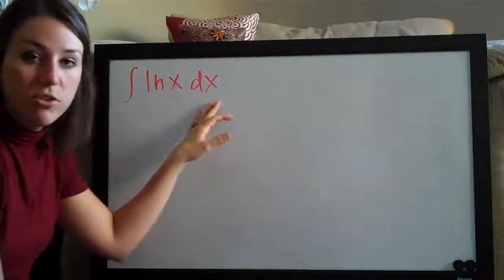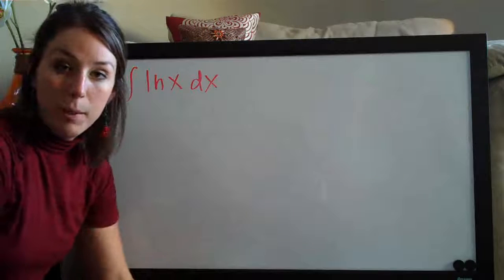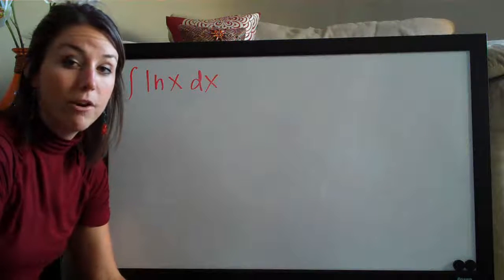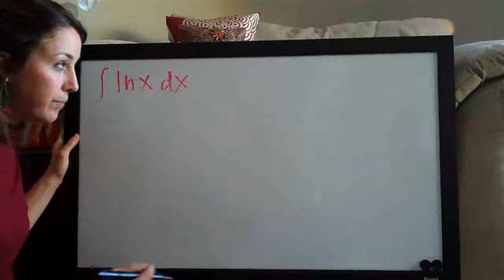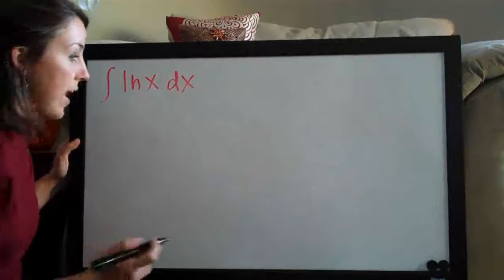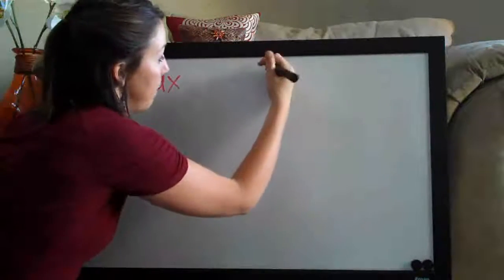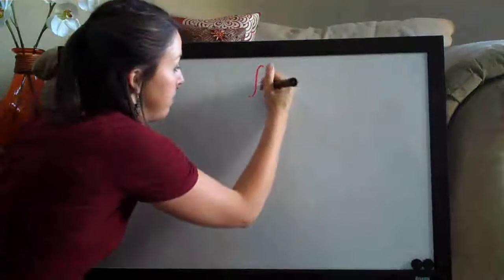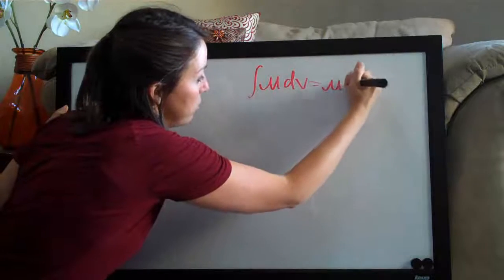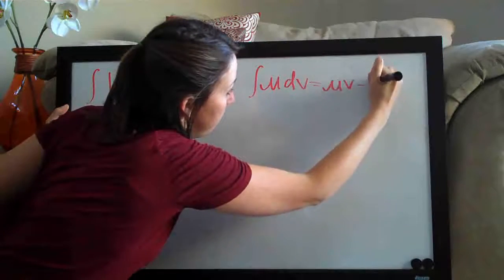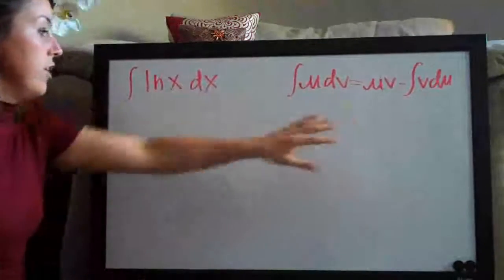The only way that we can actually do this is using integration by parts. If you're not familiar with integration by parts, then please go check out the integration by parts section on my website for more problems. But for now, we'll just walk through this example and hopefully it'll make more and more sense as we go. I'm going to write the integration by parts formula over here so that we can reference it: the integral of u dv equals u times v minus the integral of v du.